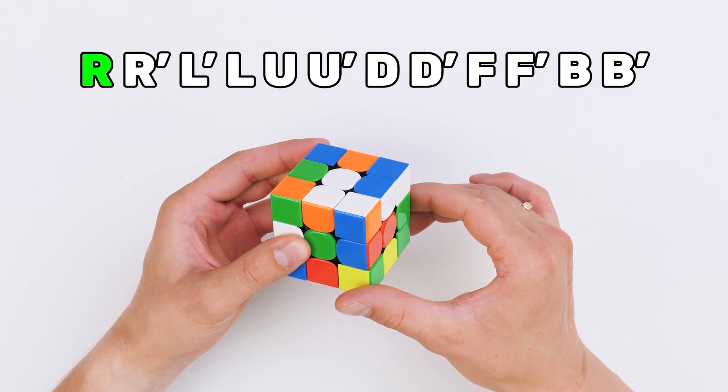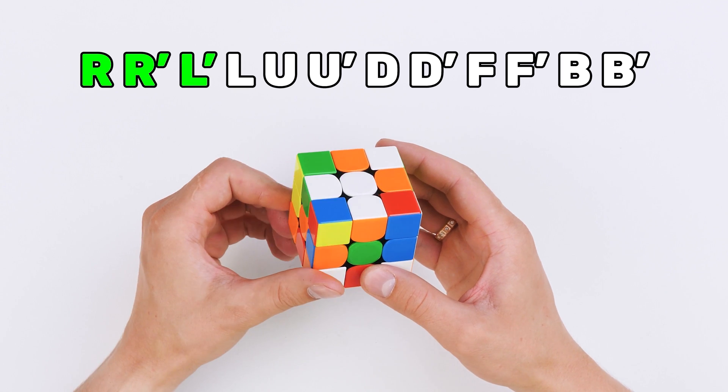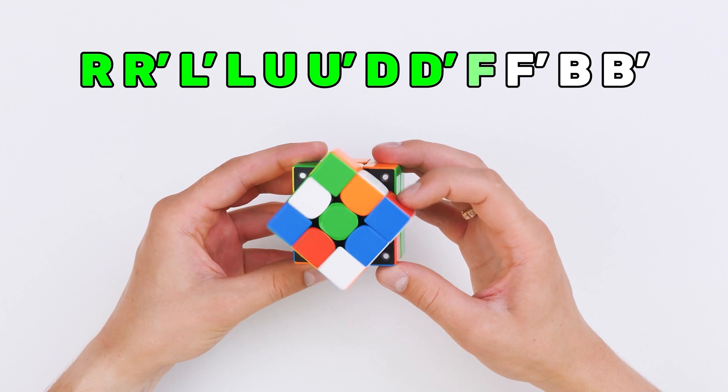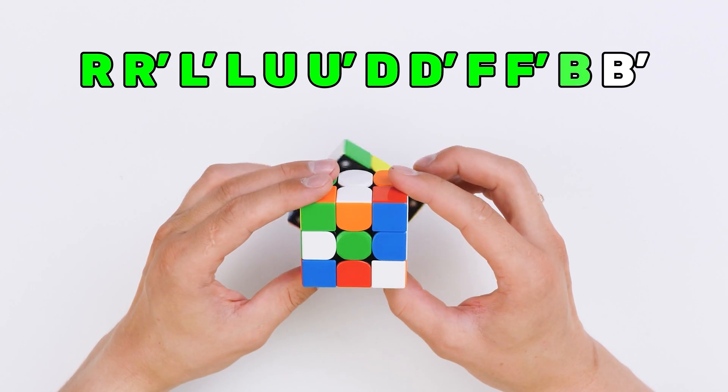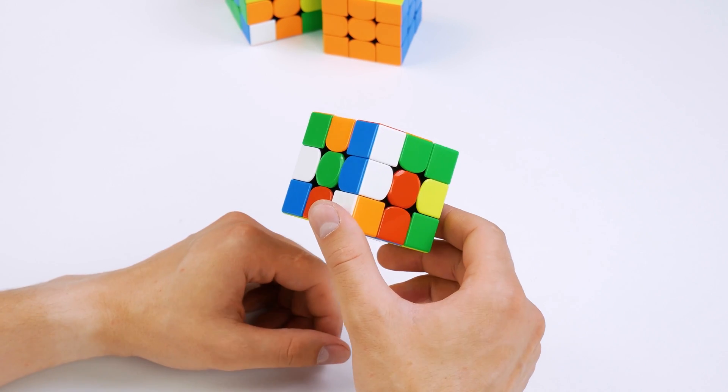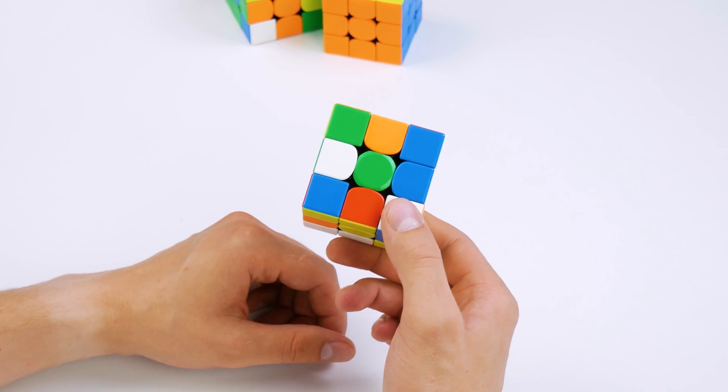There are six faces, and each of them can be rotated clockwise and counterclockwise. Each move has its name. But for your convenience, we also prepared pictures for clarity.